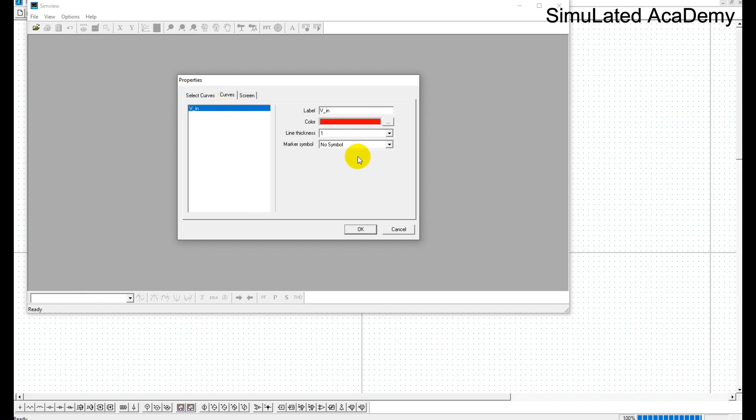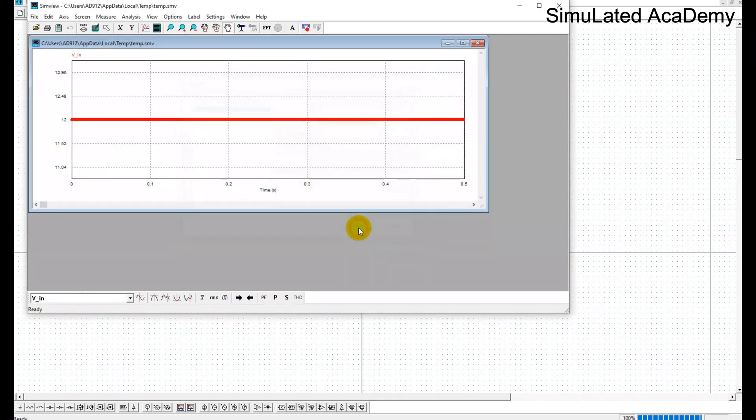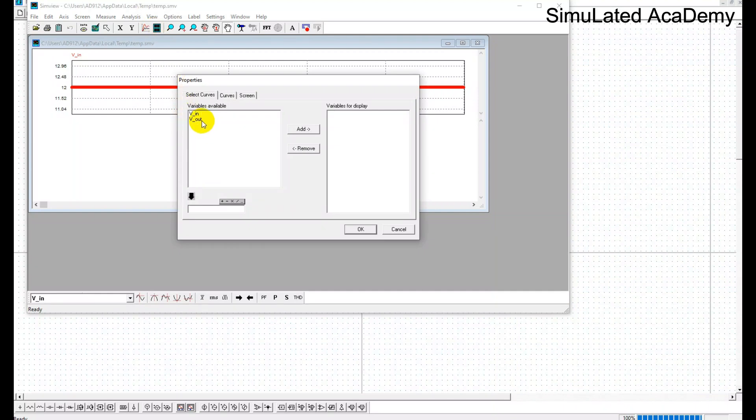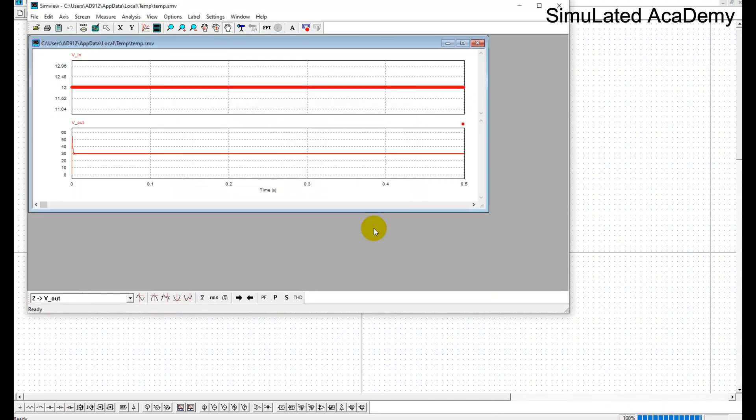Here it is. I'll keep Vin and you can change its color or anything you want. I'll just select it and make the line width 2. This is the input voltage.